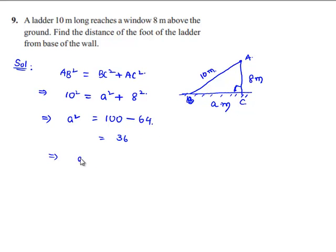That implies a squared equals 36, so a equals the square root of 36, which is 6. Therefore a equals 6 meters.